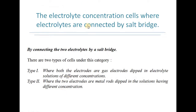By connecting the two electrolytes by salt bridge, we get an electrolyte concentration cell without transference. There are further two types under this category: first, when both electrodes are gas electrodes dipped in electrolyte solutions of different concentrations; second, when the two electrodes are metal rods dipped in solutions having different concentration.